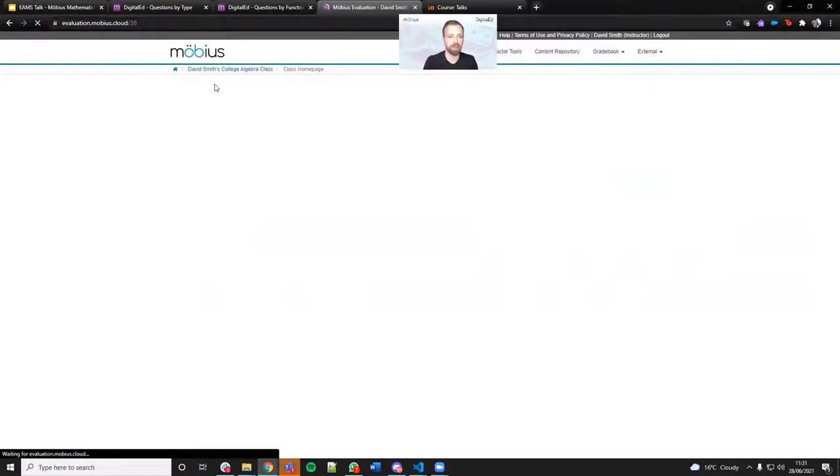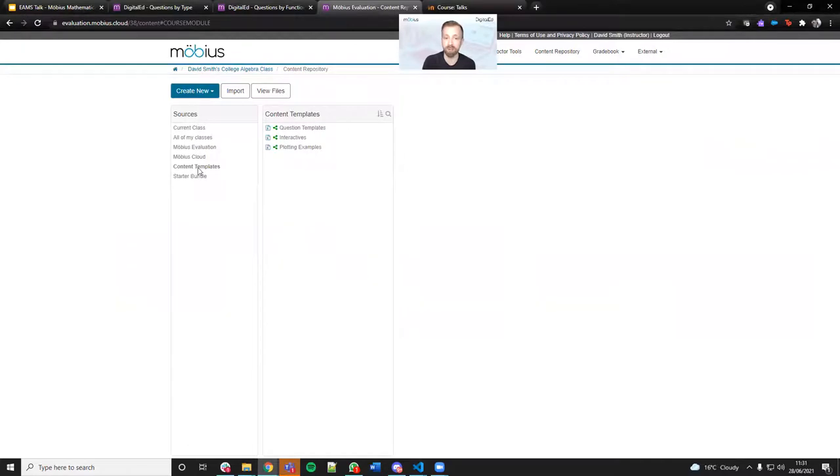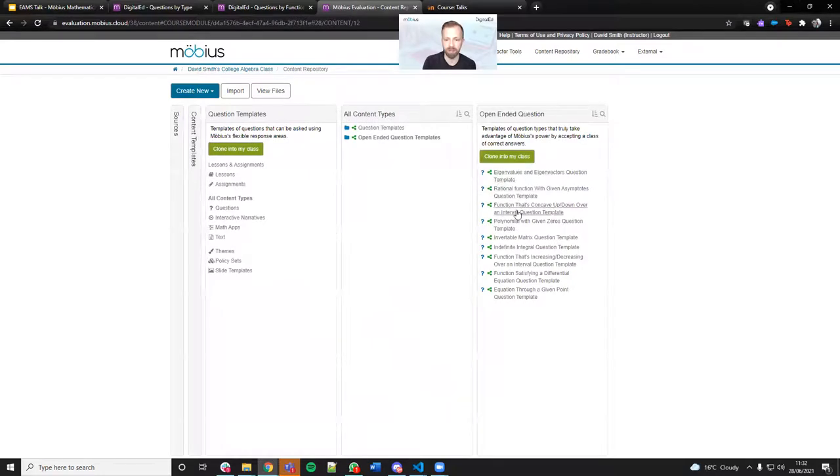Not just the content packs, but also new this year is this idea of content templates. For any Mobius customer, they will now see the content templates listed as a source. Those include, under the question templates, some of those open ended questions. We can see we've got around a dozen of those.